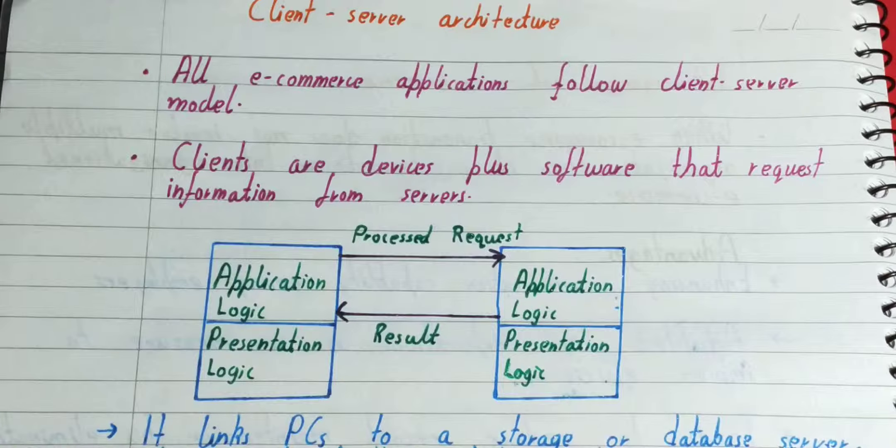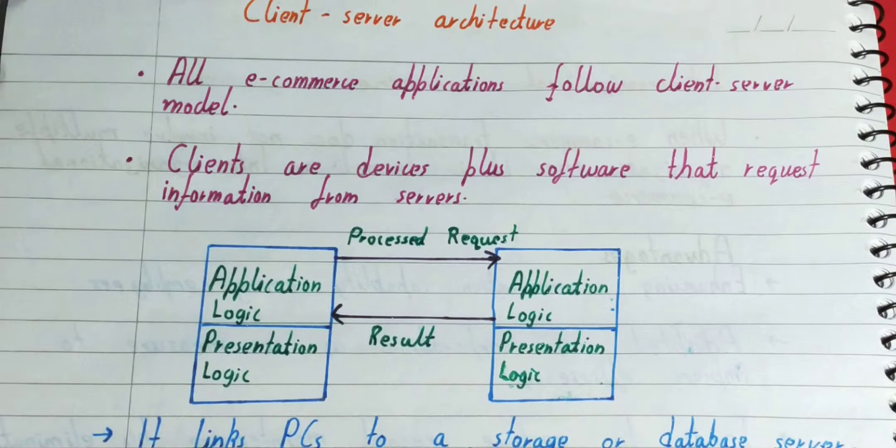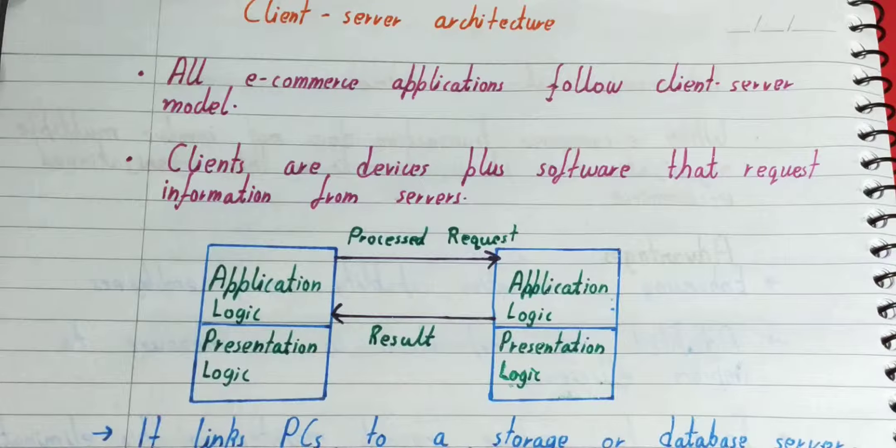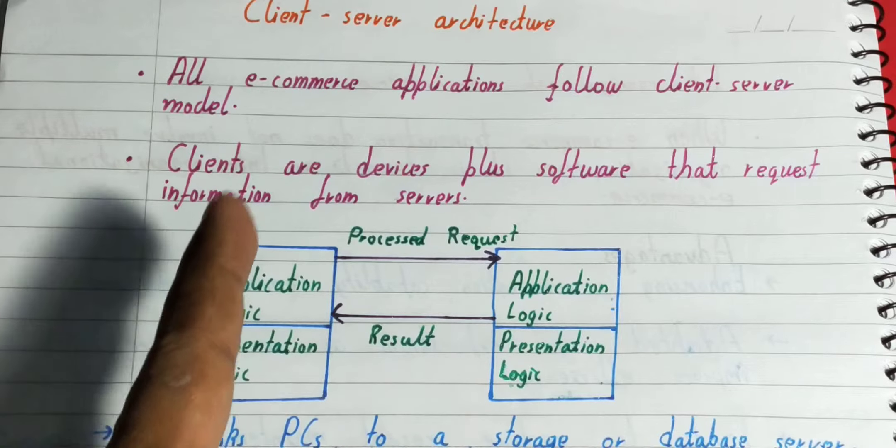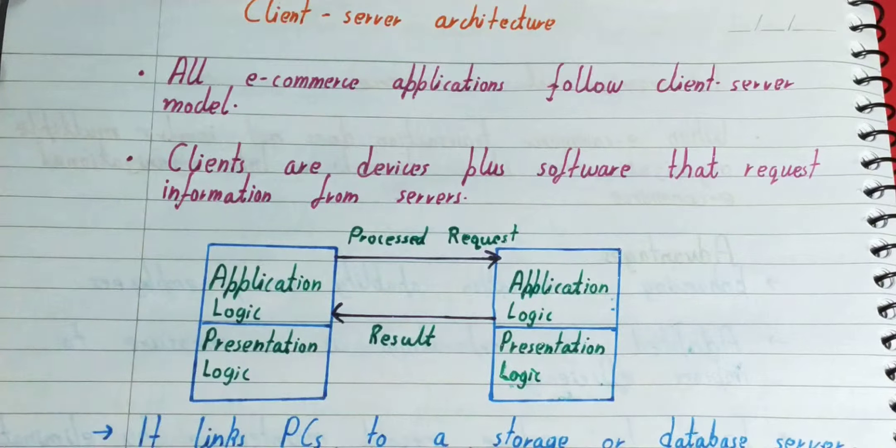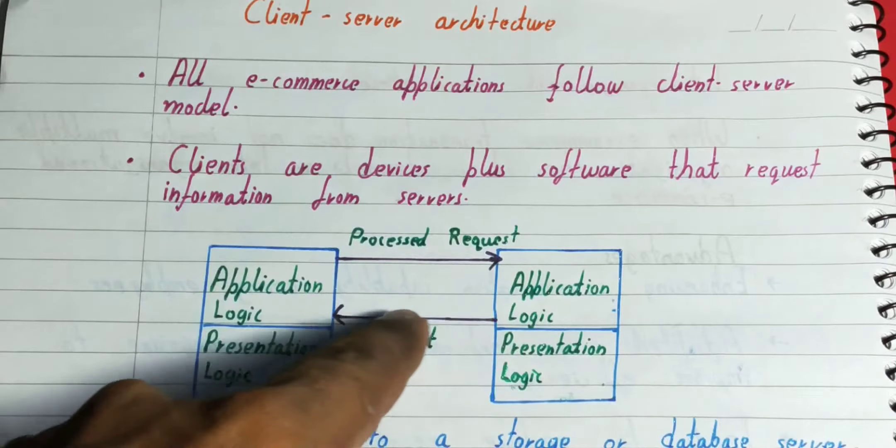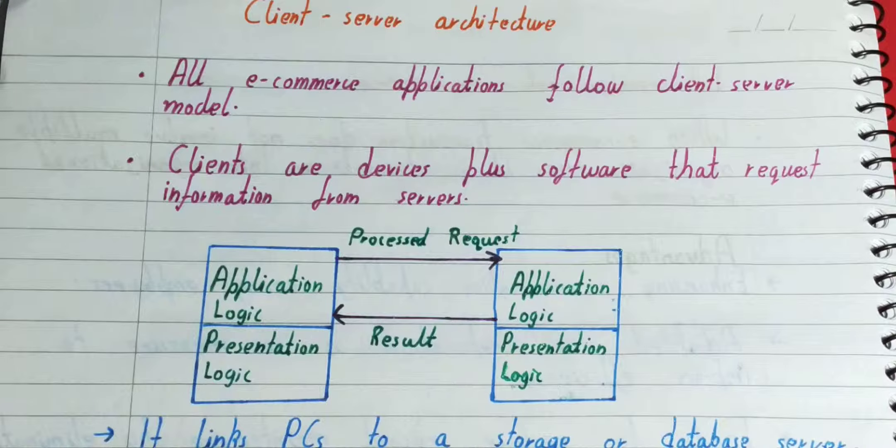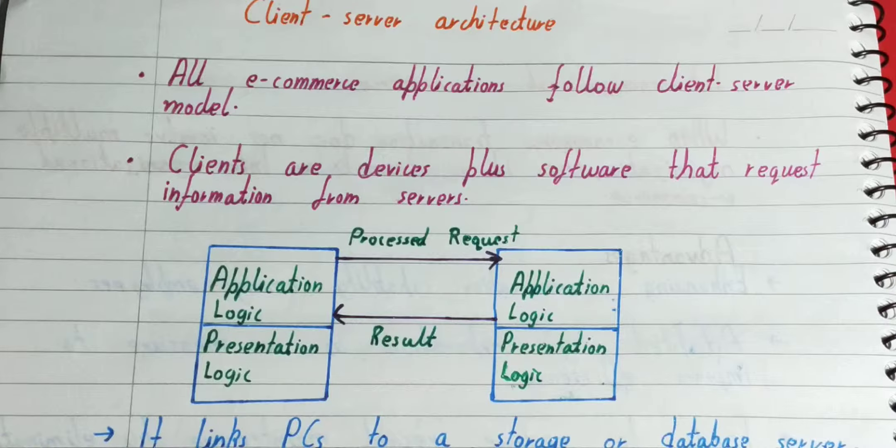If clients want some kind of work to be done from the server, they process a request to the server. If it is authentic and right, then the server gives the result to the client. This is how client-server architecture works. This is a basic diagram.